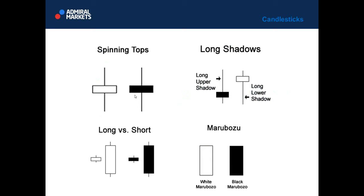Trading and buying off support and selling close to resistance is the primary goal and the primary method when we use candlesticks in confluence. Me and Chris presented 48 different candlestick patterns through all of these webinars. On the premium webinar, I presented all of those candlestick patterns which can be spotted and found on Forex market trading. By default, white is bullish, black is bearish.